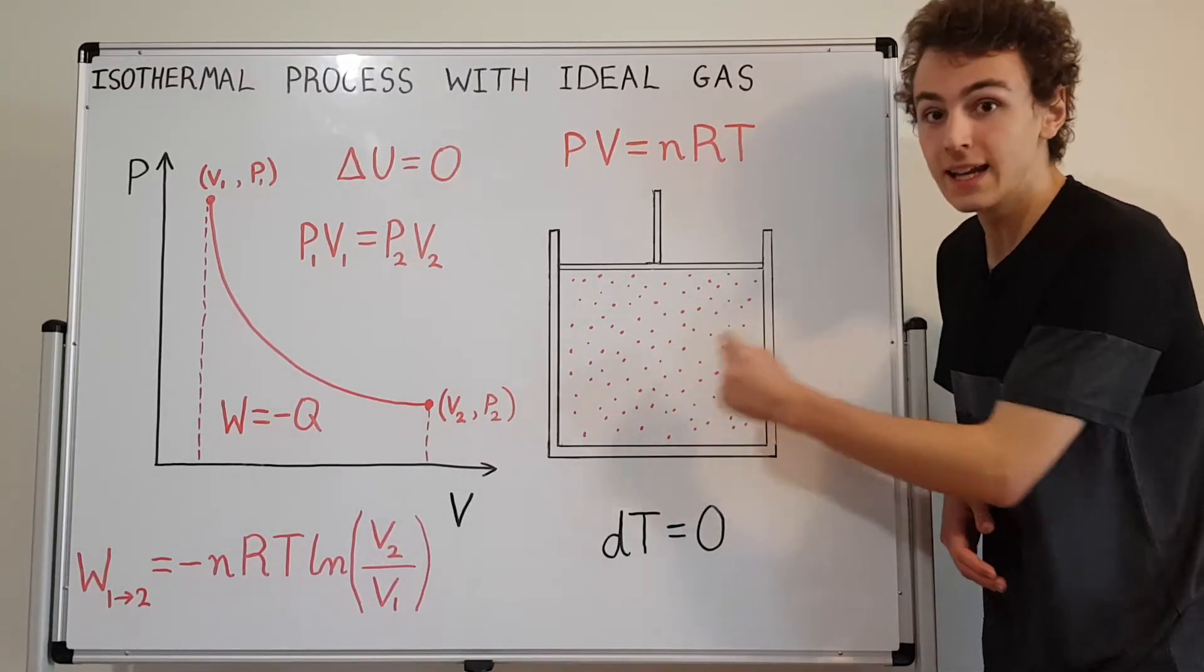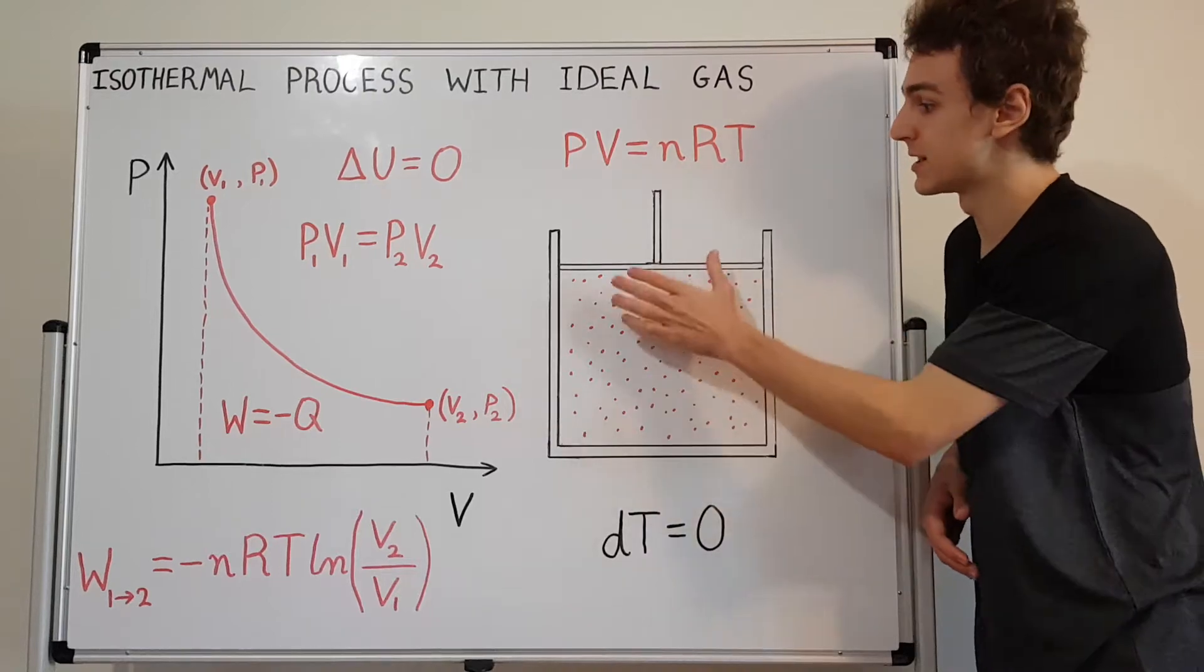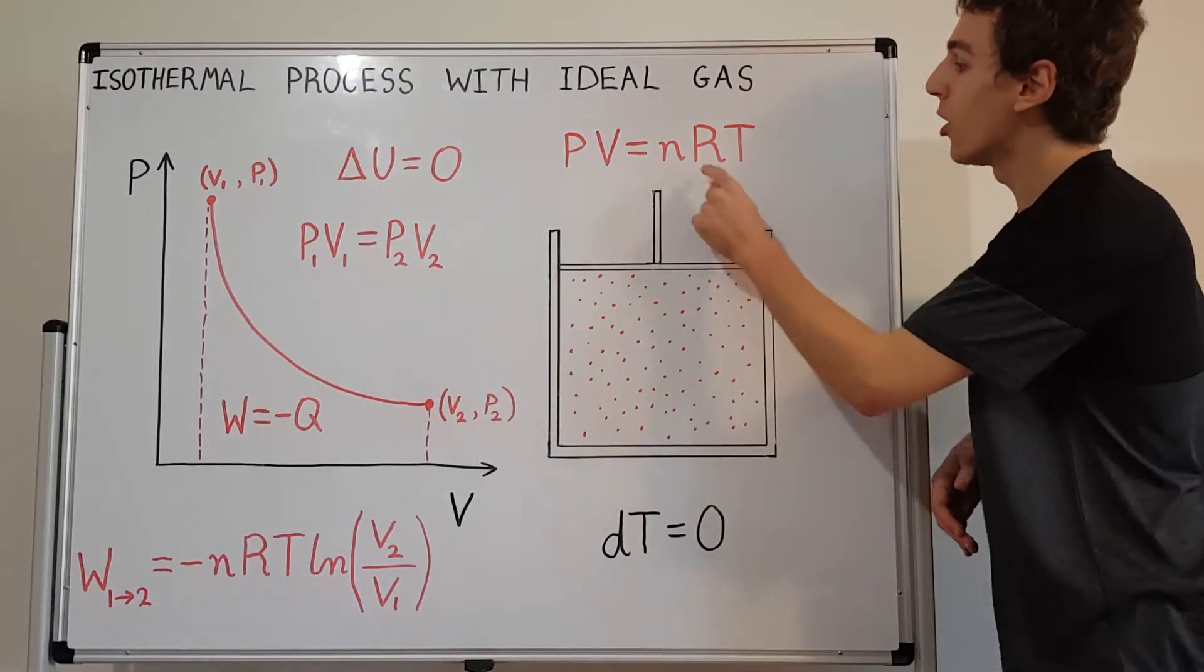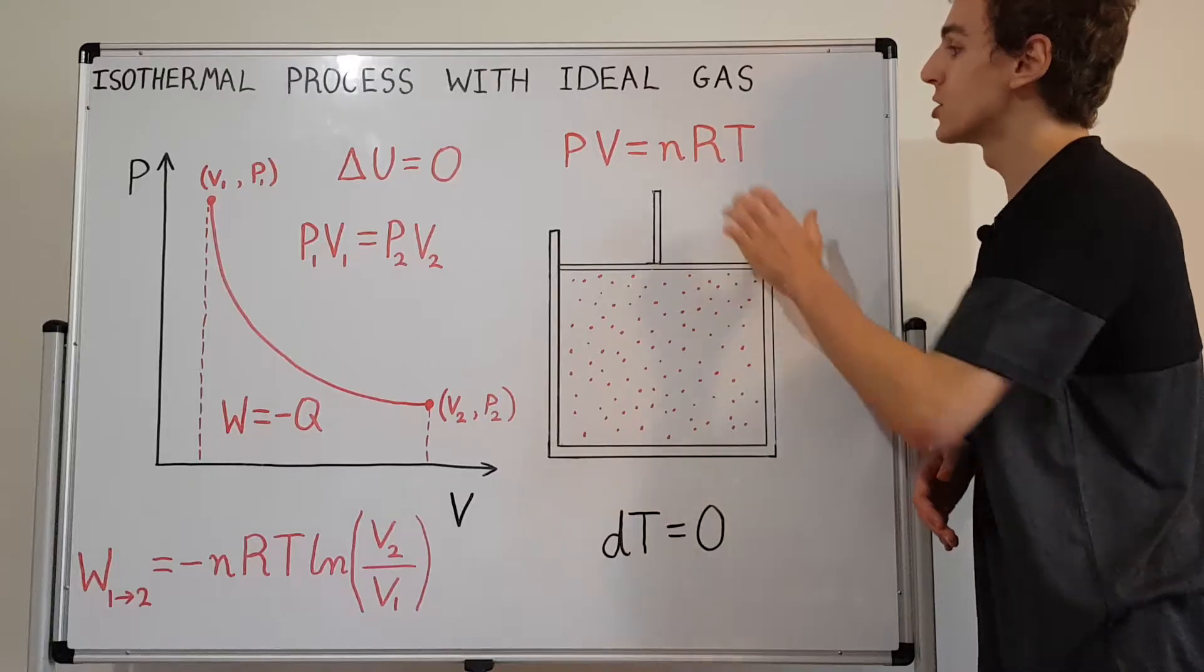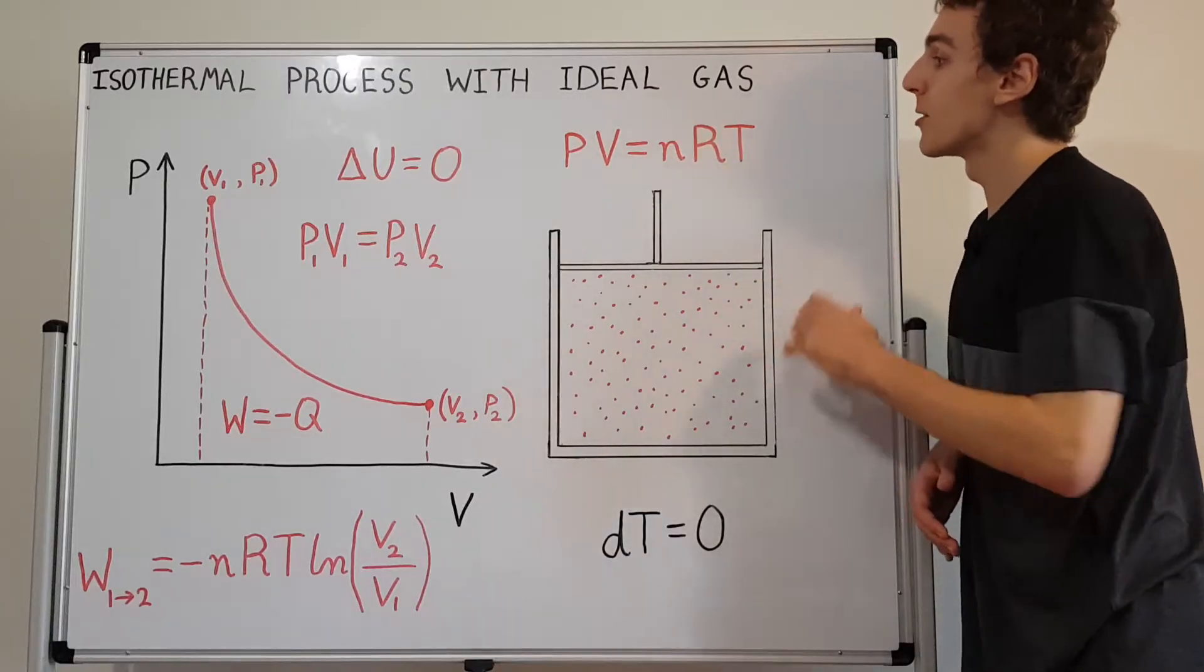There's no flow of matter in and out. So it's a closed system in that respect. R over here, that's the gas constant, so that's not going to change. So this product, nRT, that is constant. That's not going to vary over time.